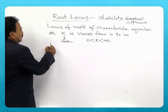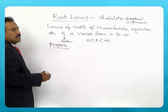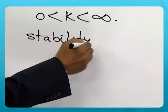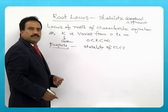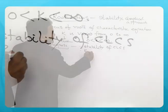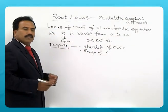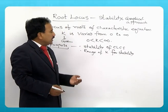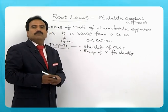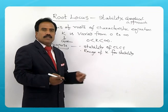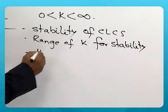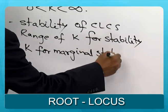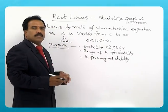The advantages of root locus — what is the purpose of root locus? As mentioned, it is to know the stability of the system, to find out the stability of a closed loop control system, and to find out the range of k for stability. The system may not be stable for all values of k from 0 to infinity, so we determine the range of k for the system to be stable, and we can also find the value of k for marginal stability — that is, the critically stable condition.